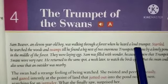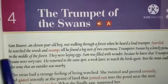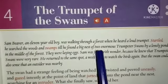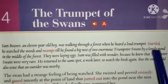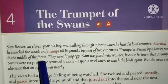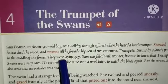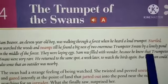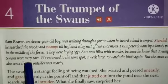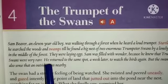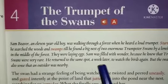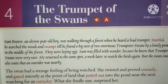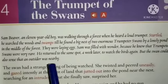Unit — 'The Trumpet of the Swans'. Sam Beaver, an eleven-year-old boy, was walking through a forest when he heard a loud trumpet. Startled, he searched the woods and swamps till he found a big nest of two enormous trumpeter swans by a lonely pond in the middle of the forest. They were laying eggs. Sam was filled with wonder because he knew that trumpeter swans were very rare. He returned to the same spot a week later to watch the birds again.